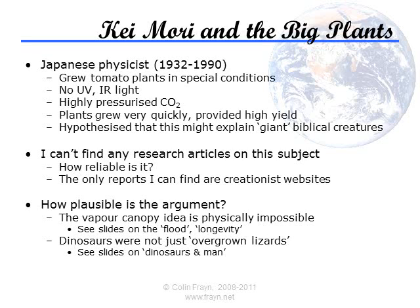We know the flood doesn't occur because of the lack of evidence for it having occurred. In fact, this is a prime example of one of those cases where absence of evidence is evidence of absence. When you would expect to see a staggering amount of evidence for an event and you fail to find any evidence, then this is a very strong argument that the event never occurred. See the presentations on the flood later on for more on this, as well as sections on geology and archaeology for how we know there was no global flood.